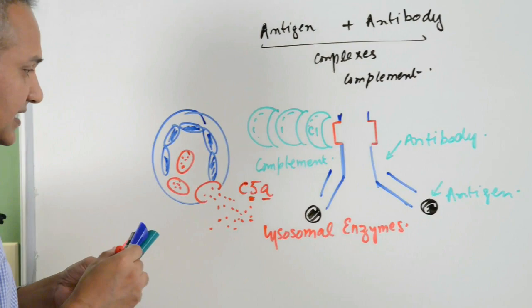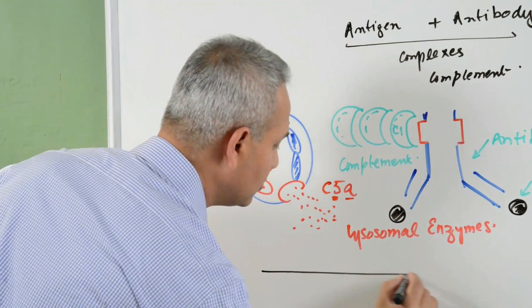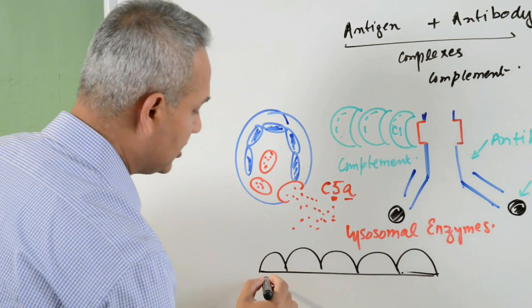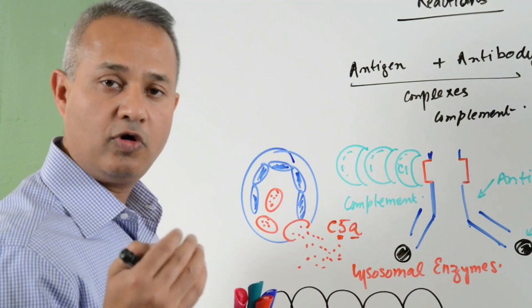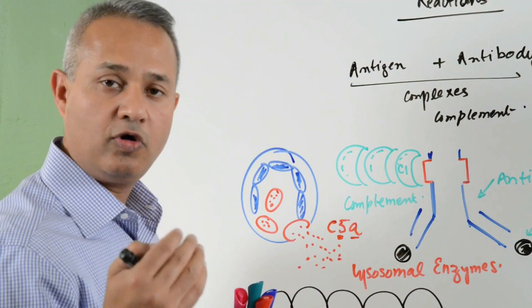These enzymes that have come out of the neutrophils will cause damage to the local tissue. Whatever that tissue is, mostly the glomerular membranes, then the joint membranes, blood vessels or wherever else these things deposit. The cells wherever this lysosomal enzyme would go, these cells would start breaking down.